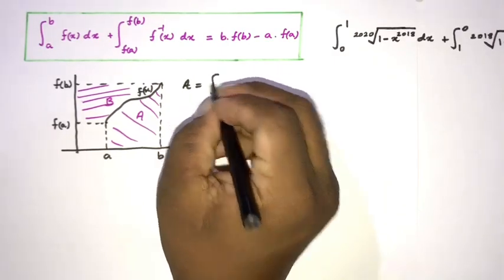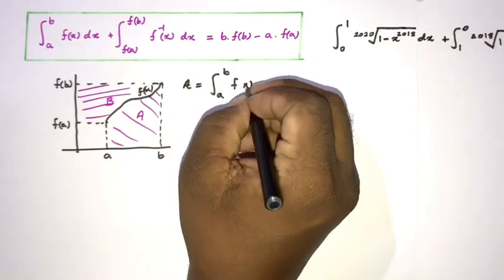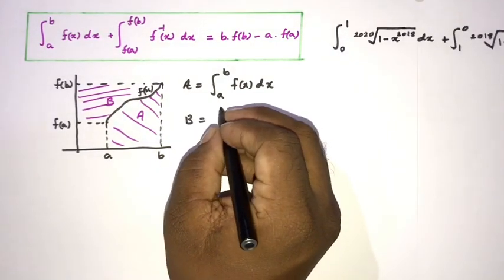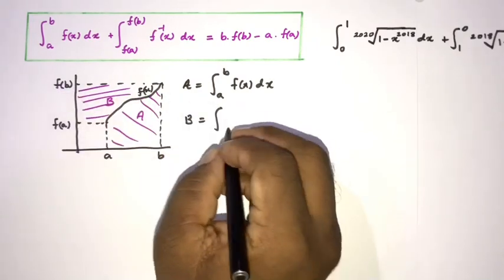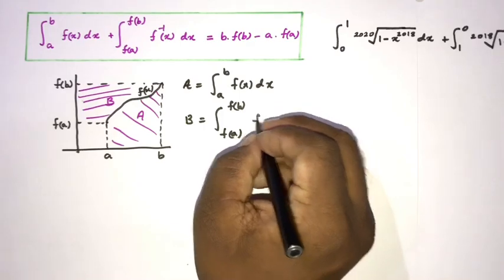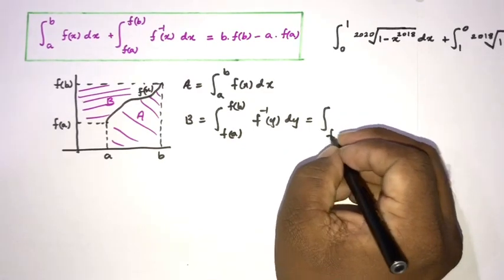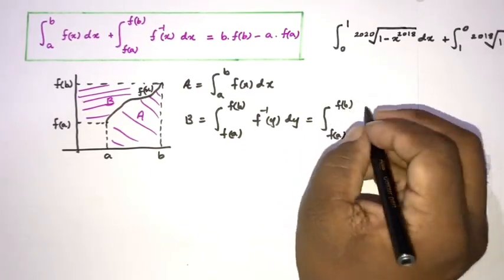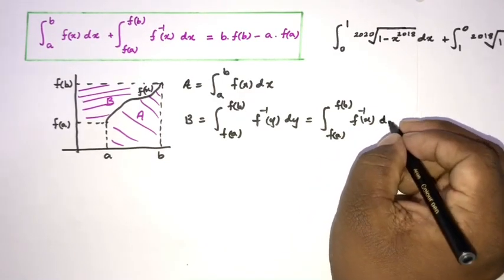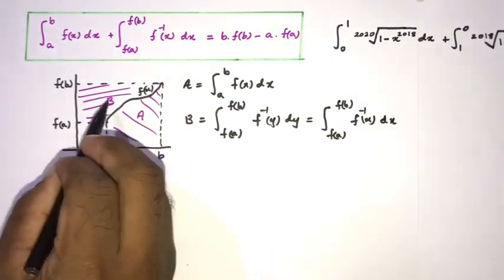We know capital A can be represented as the integral from a to b of f(x) dx. Also, we can represent area B as the integral from f(a) to f(b) of the inverse of f(x) dx.